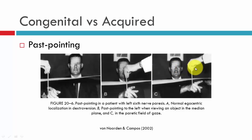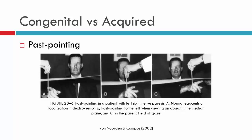When we move into laevoversion, we're asking the patient to use their paretic muscle, the left lateral rectus. Additional innervation will be going to this muscle to allow it to abduct. This excessive innervation to the lateral rectus will cause past pointing — the patient will point past the target. There is some controversy as to whether this is the mechanism, but most consider it the most likely reason. Past pointing also occurs in primary position because the patient is abducting the eye from an esotropic position caused by the unopposed medial rectus, requiring more innervation to the lateral rectus.